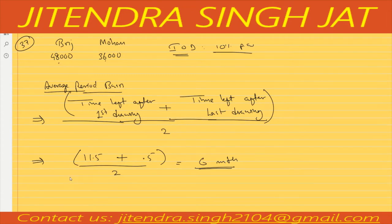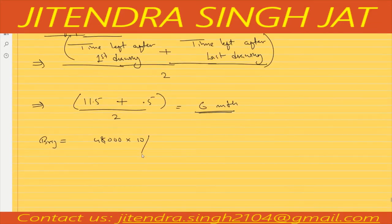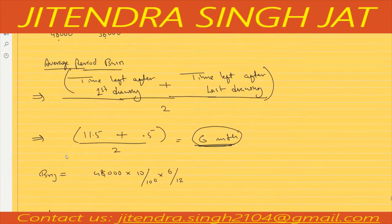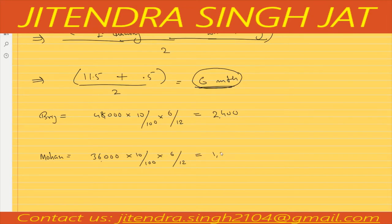This average period basis method is only used when an equal amount is withdrawn at equal/regular intervals. So let us calculate: Bridge: 48,000 × 10% × 6/12 = 2,400. Mohan: 36,000 × 10% × 6/12 = 1,800. I hope this question is clear to everyone.